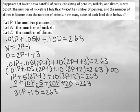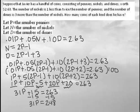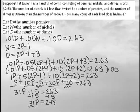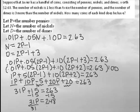Now we need to isolate p. We subtract 15 from both sides to get 31p = 248. Then dividing both sides by 31, we get p = 8. We've found the number of pennies.